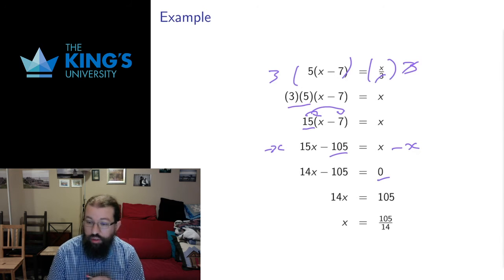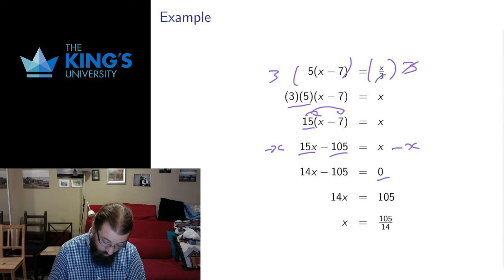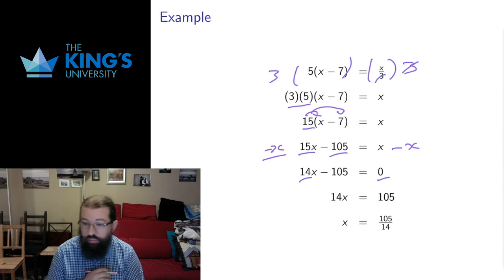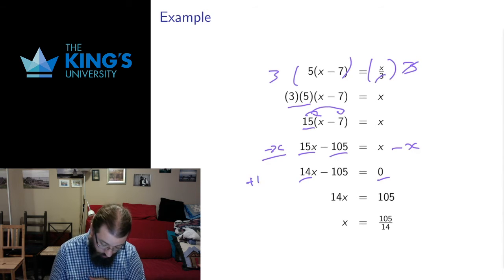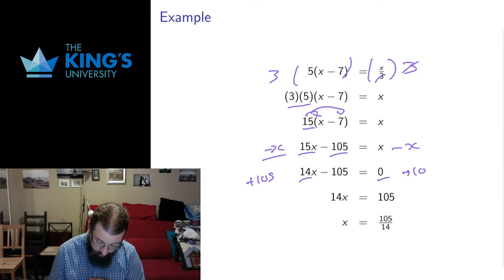What I did on this step is I subtracted x from both sides of the equation. x minus x, anything minus itself is 0. 15 minus 1 is 14. So I got 14x.